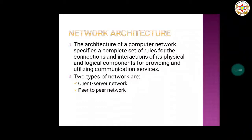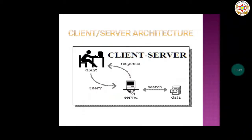Let us talk about client-server architecture. In the diagram we can see there is a client and a server. The client sends a request or query to the server. The server fetches the information from its database, data warehouse, or other various sources, and then responds back to the client. This type of network is called the client-server architecture.